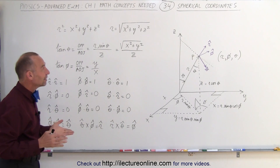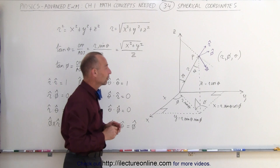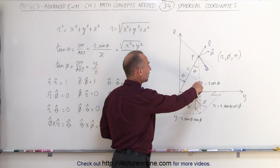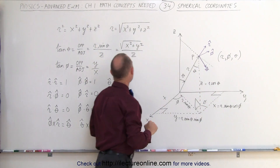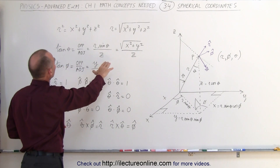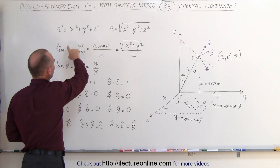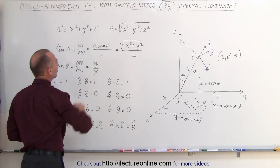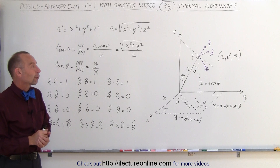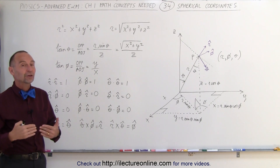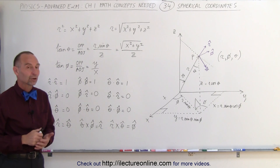So here we have a nice introduction to what we call spherical coordinates. We have the relationship between x, y, and z versus R, theta, and phi; relationships between R and the Cartesian coordinates; and relationships between the angles and x, y, and z. Next we're going to show how to find all the various operations using spherical coordinates.